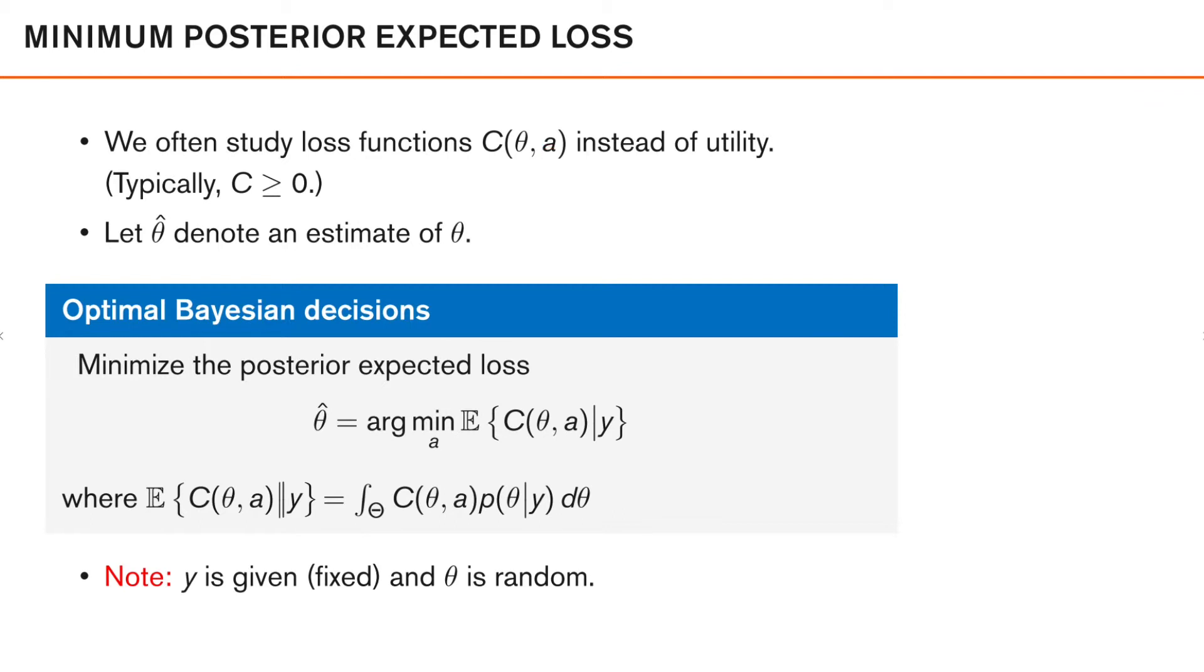Now, in this course, the decision that we want to make relates to choosing an estimate of theta. So if theta is, for example, the distance to an object that we are interested in, then our estimate is the distance that minimizes our expected posterior loss. So to emphasize that we are actually making a decision on theta, we usually denote our decision as theta hat, which is then our estimate of theta.